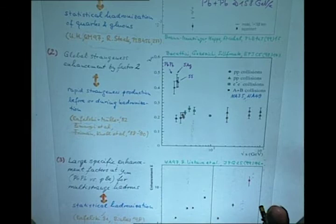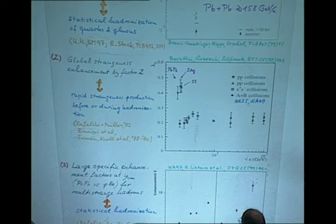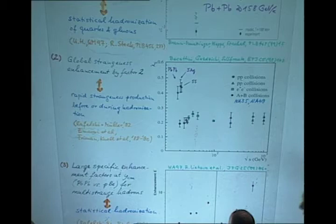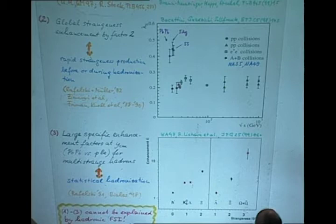The second key observation is that this chemical equilibrium comes along with an enhancement of strangeness overall. If one calculates from the final state the fraction of produced strange anti-strange quark pairs compared to the produced light quark pairs, this ratio is different by a factor of 2 from elementary particle collisions, proton-proton, electron-positron, proton-antiproton collisions. This indicates that there must be a new type of rapid strangeness producing processes active before the hadronization.